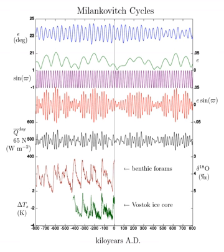When the orbit is more elongated, there is more variation in the distance between the Earth and the Sun, and in the amount of solar radiation at different times in the year.